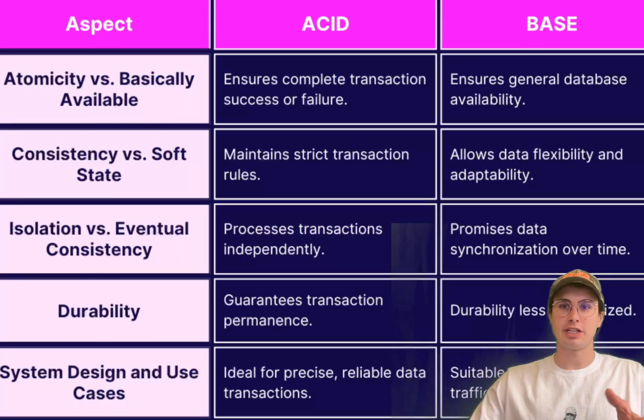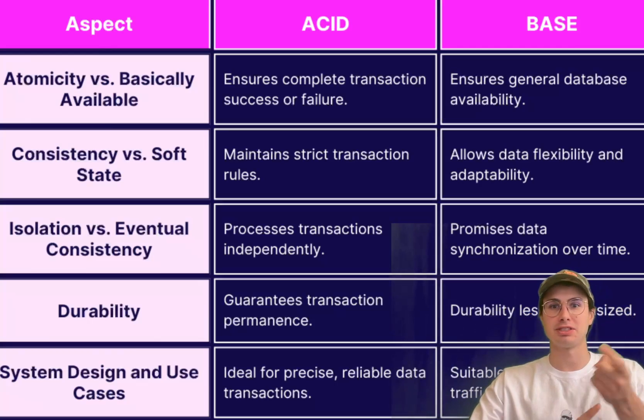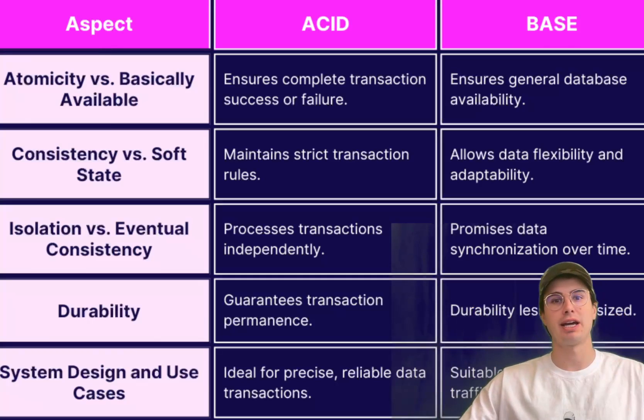So now I also want to give you a framework here for deciding if you actually need an ACID database. And so I would say the main four critical things are number one, assessing the criticality of data integrity. If data integrity is critical for the business or application, ACID compliance is likely essential.